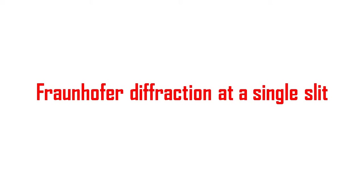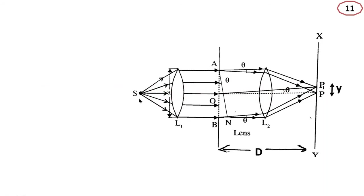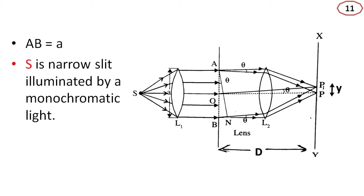Fraunhofer diffraction at a single slit. Let S be the source and XY be the screen. There is a lens L1 and a lens L2. In between them there is a slit AB. The size of the slit AB is equal to small a. This is the source, which is a narrow slit illuminated by monochromatic light.